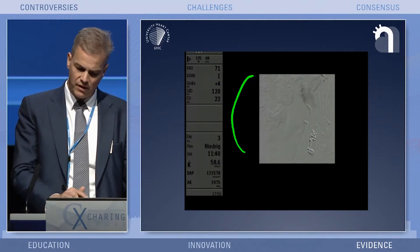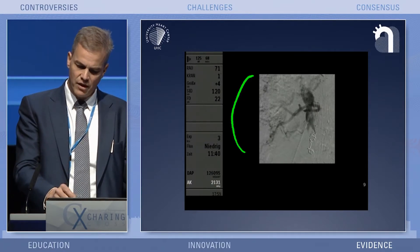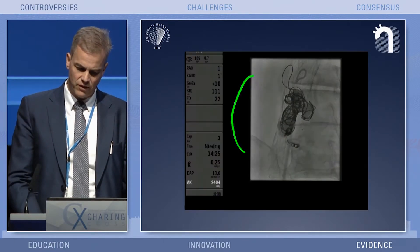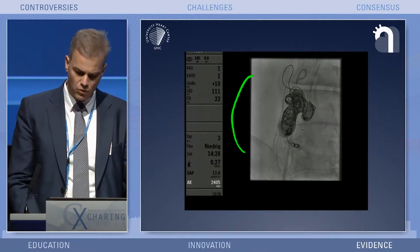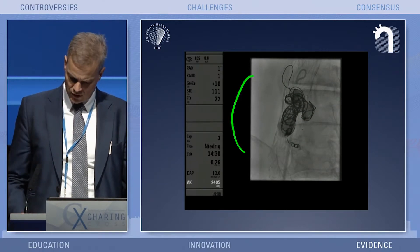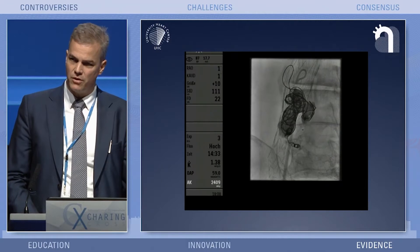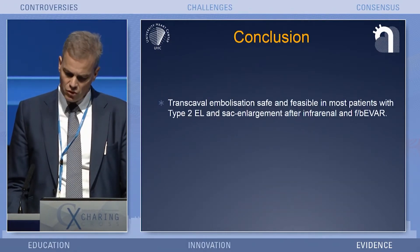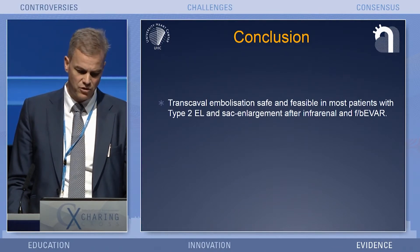If the coils — such as this nester coil — are too long, it's not a disaster. If you miss the selective arteries, we perform coil embolization and also glue, which is our preferred liquid embolic agent. To conclude, transcaval embolization is a safe and feasible technique. In most patients it's our preferred first option if the patient has suitable anatomy.